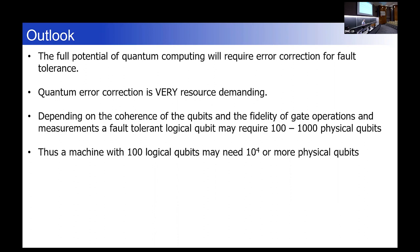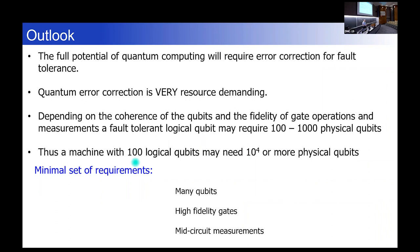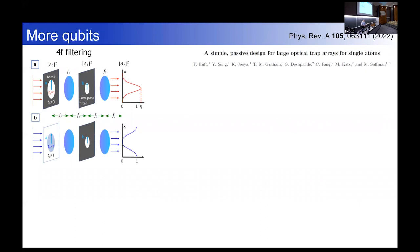What's the outlook? The full potential of quantum computing is going to require error correction for fault tolerance. Error correction is very resource-demanding — a fault-tolerant qubit might require 100 or 1000 physical qubits, so a machine with 100 logical qubits that could solve grand challenge problems is a really big number of physical qubits. A minimal set of requirements is a lot of qubits, high fidelity gates, and mid-circuit measurements for error correction.